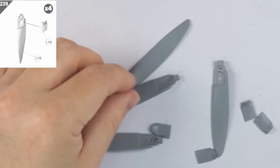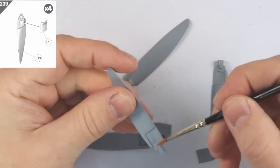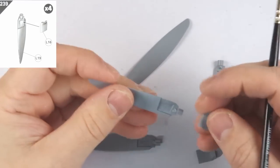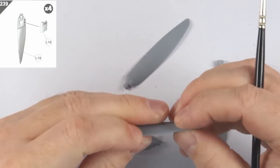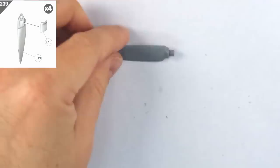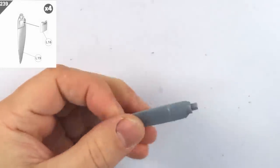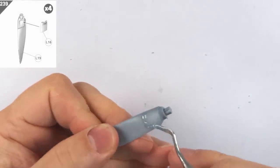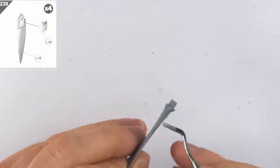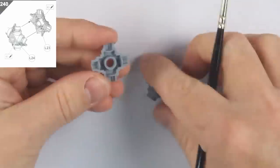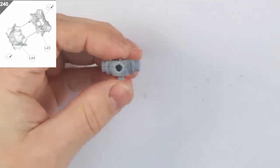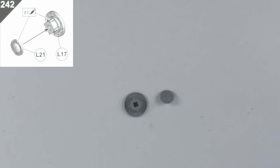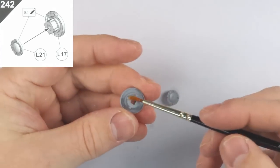Jumping further ahead still, I'm assembling the props. These are two-part assemblies that result in a noticeable seam, as I carefully filled with a thin putty for later clean-up. Steps 240, 242 and 243 deal with the rear of the propeller assembly, and again, all go together with no real issues.